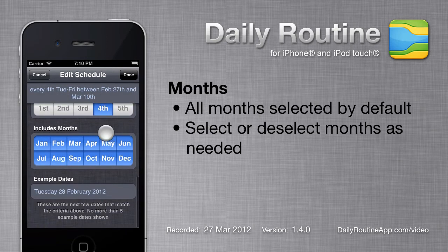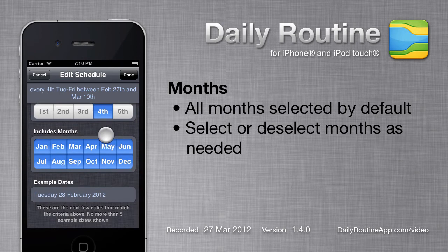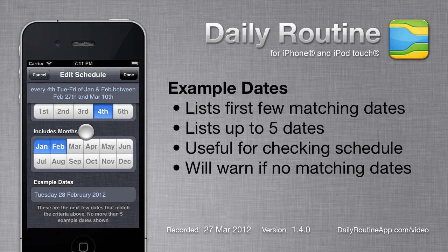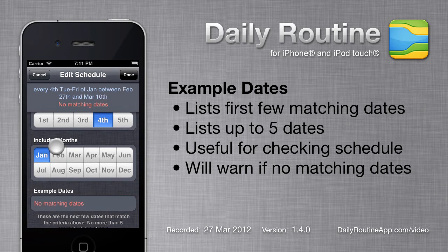Finally, we have months. By default, all months are selected, but we can deselect them as needed. Our schedule description is getting quite complicated, so at the bottom of the page we also see a list of the first few dates covered by the schedule. This list will warn us if our schedule matches no dates.